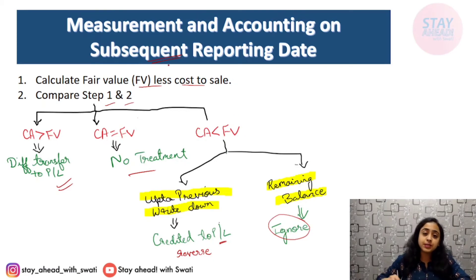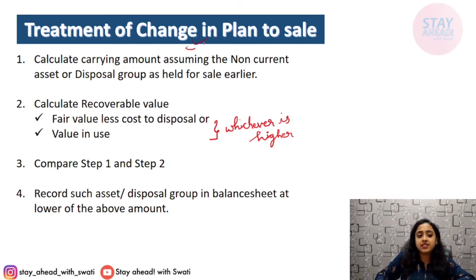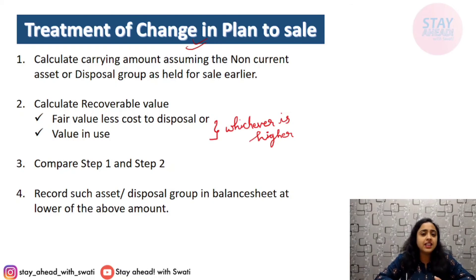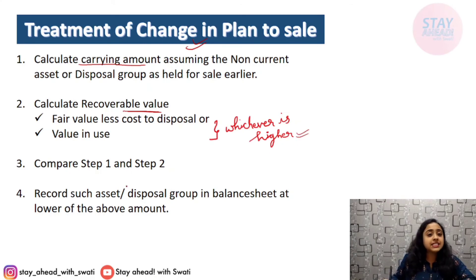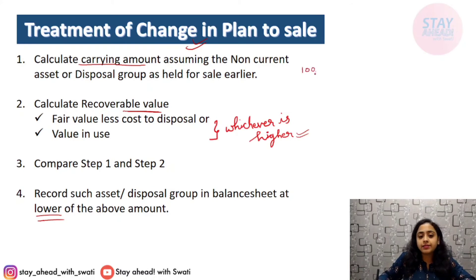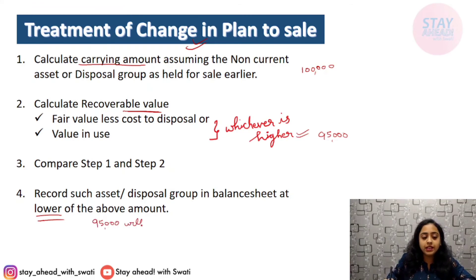Treatment for change in plan to sell: if an entity decides not to sell the asset due to changed circumstances, the steps are as follows. Step one: calculate carrying amount as if the non-current asset or disposal group had been held for use. Step two: calculate the recoverable amount, which is the higher of fair value less cost of disposal and value in use. Step three: compare — whichever is lower will be recorded in the books. For example, if carrying amount is ₹1 lakh and recoverable amount is ₹95,000, then ₹95,000 is recorded in the balance sheet.